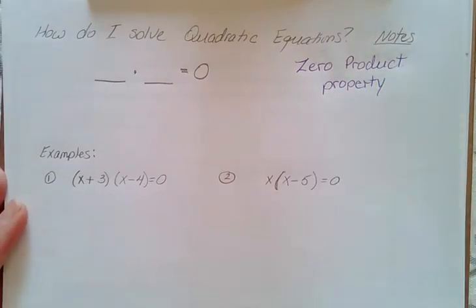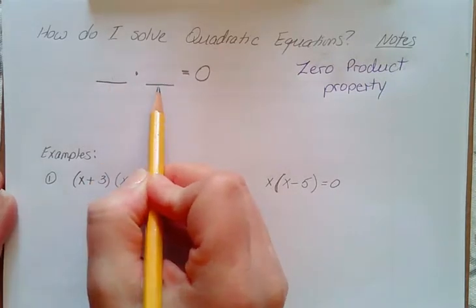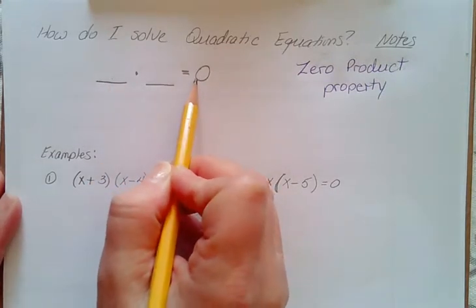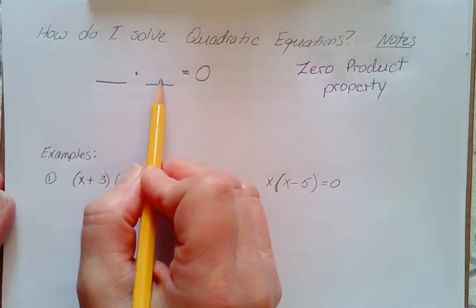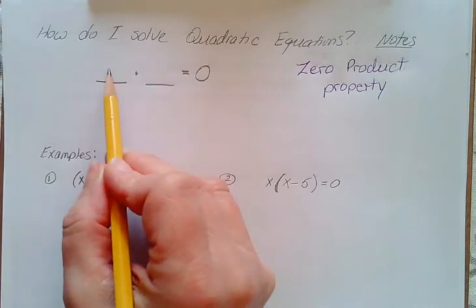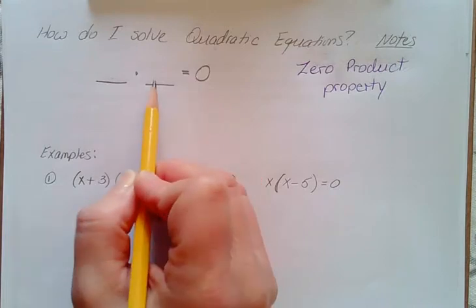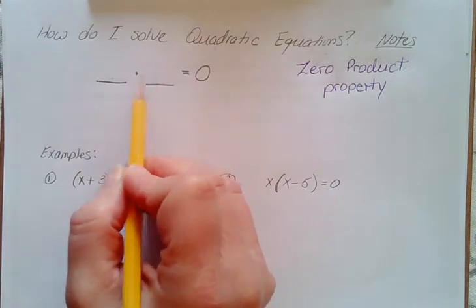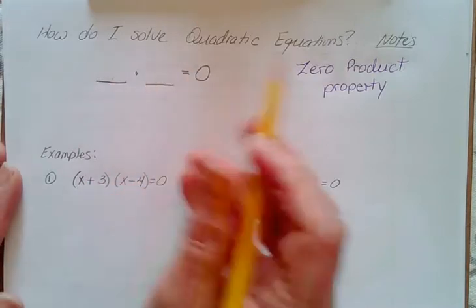Zero product - basically what it means is if you are multiplying two numbers and you are getting zero as the answer, what has to be true about these numbers? Well, if this number was 5, 5 times what gives you 0? 0 has to be 0. Or if it was negative 3, negative 3 times what gives you 0? 0.